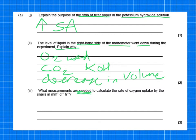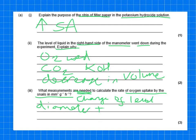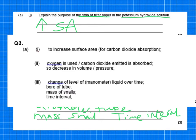So what measurements are needed? So you don't have to calculate it. You just need to say what is needed to calculate the rate of oxygen uptake by the snails in millimetres cubed per gram per hour. So we are going to need to know the change in the movement of the liquid. So change of level of the liquid. We're going to need to know the diameter of the tube or the bore of the tube. You'll also need to take into account the mass of the snail. And also you could mention as well, you need to know what time interval as well. So, for example, in the previous question, it had a time interval of 10 minutes. So whatever you got, you would times it by six to get it to per hour.